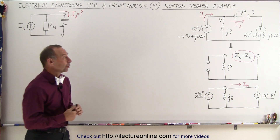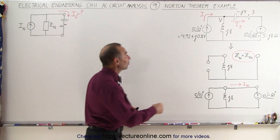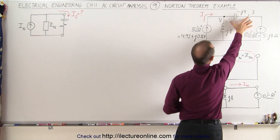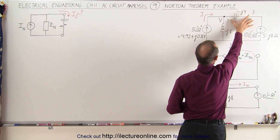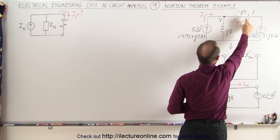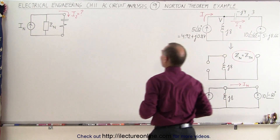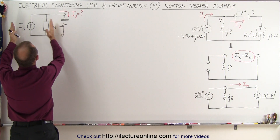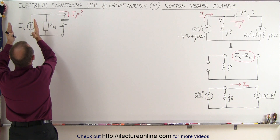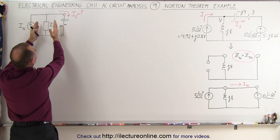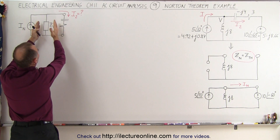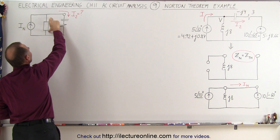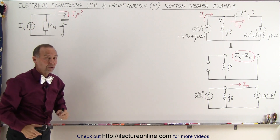The way the Norton Theorem works is we take this part of the circuit right here, the one that feeds what we would call the load impedance, through which we're trying to find the current. We take that circuit and turn it into a circuit with a source current and a source impedance, where the source impedance is in parallel with the source current.